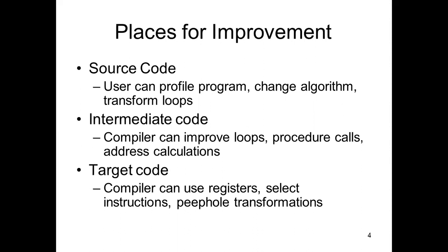We can apply optimization at the source code level, intermediate code level, or the target code level. At the source code level, the user can profile the program, change the algorithms, or transform the loop mechanisms. At the intermediate code level, the compiler can improve loops, procedure calls, and address calculation. At the target code level, the compiler can use registers, select efficient instructions, and apply peephole transformations.